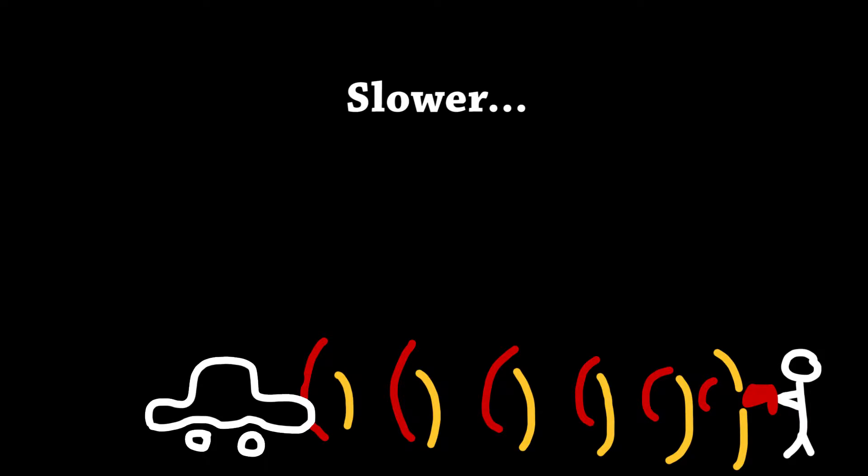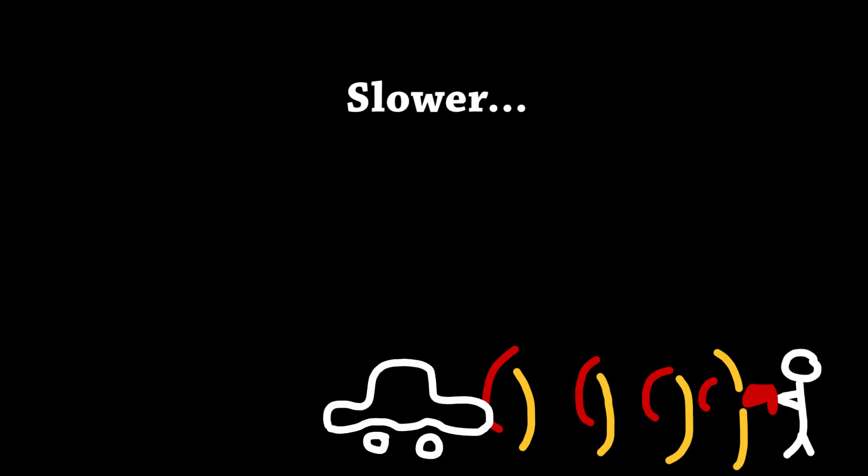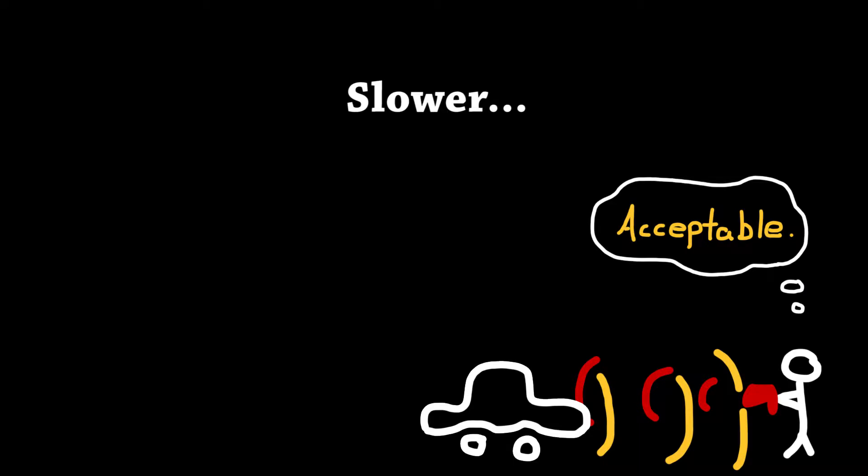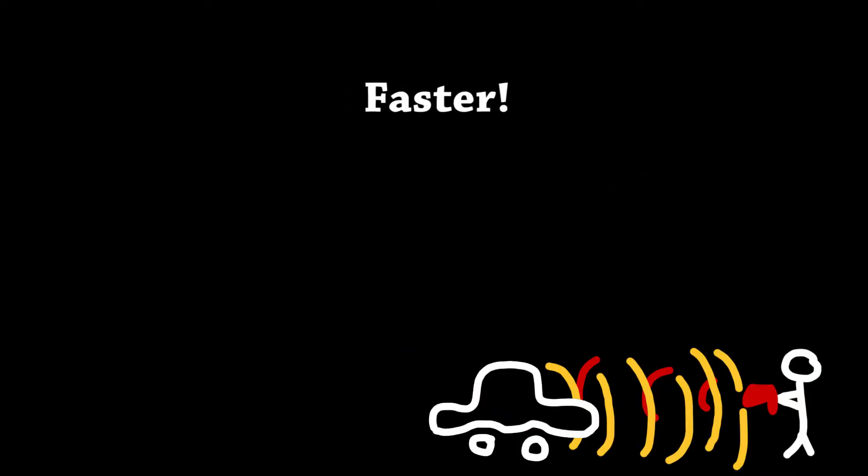The distance between each of those waves indicates how fast you're going. So the closer those waves are together, the faster you're moving, and the radar gun reads that distance between the waves to determine your speed.